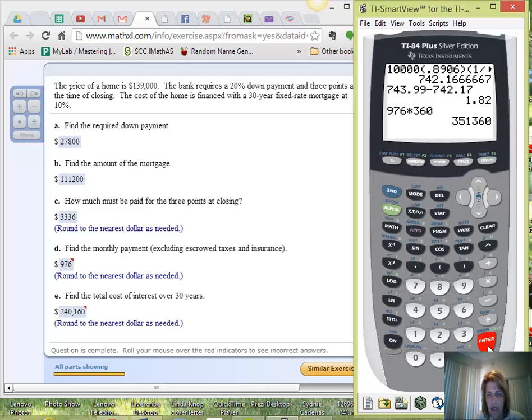I get $351,360. That's how much total I paid over the entire loan, but I took out a loan of $111,200, so the total cost of interest would be $240,160.